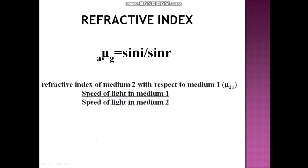Children, in our last class we had studied about refraction and laws of refraction and we had come to know about a term refractive index. Now, using Snell's law, refractive index can be calculated by the relationship: a mu g equal to sin i upon sin r. This implies that the refractive index of glass with respect to air is given by sin i upon sin r.